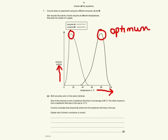Corinne suggests that one enzyme is from a bacterium that lives in hot springs at 80 degrees, and the other is from a bacterium that lives in the sea at 14 degrees. She decides that enzyme A comes from the bacterium that lives in the sea. The question asks you to explain why her conclusion is correct.